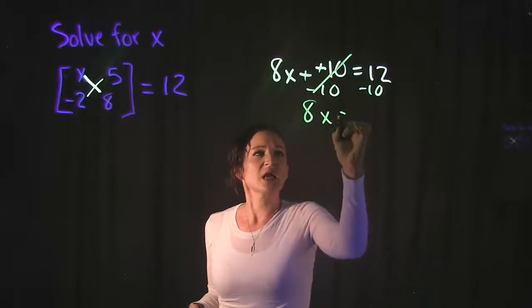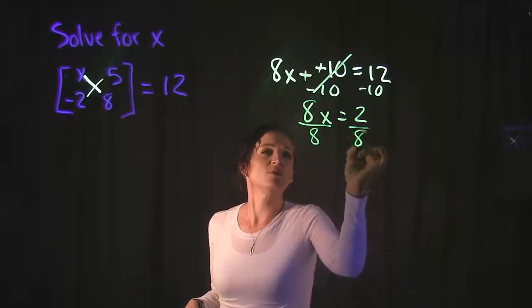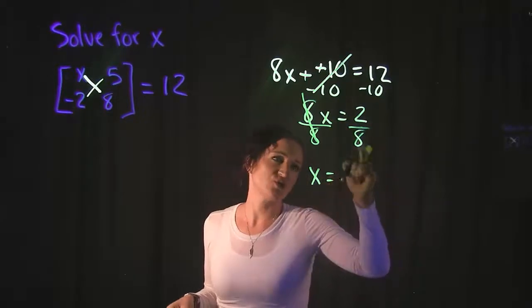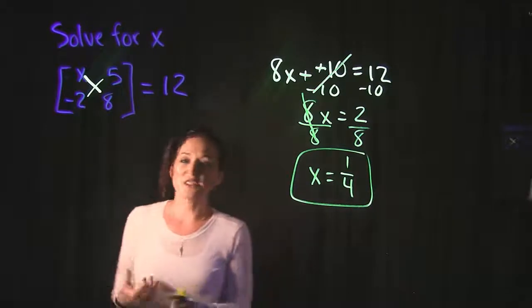When we do that, we get 8x is equal to 2. And then all we have to do is divide 8 on both sides, giving us that x is equal to, well when we simplify 2 over 8, we get 1 fourth. So that's what x is equal to.